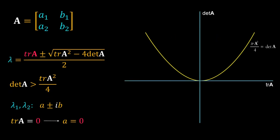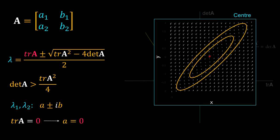Consider the case of trace(A) equal to zero — we are somewhere on the determinant axis. For trace(A) equal to zero, the real part of the eigenvalues is zero, and the dependent variables show periodic oscillations. Therefore on the phase plane, the system revolves around the steady state in a closed trajectory. This type of phase portrait is called the center type. The steady state at zero is not stable — if you disturb it from the steady state, the system will revolve around it in a closed orbit.